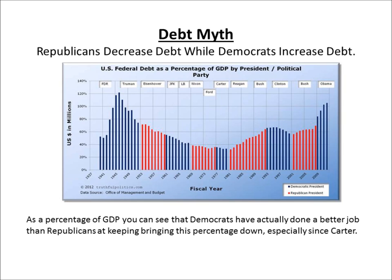Any president we would have elected in 2008 — this spending would have increased in response to the recession. Because Keynesian economics dictates that you flood the market with income, with revenue, to stimulate the economy. Bush kind of did this with the bailout right at the end of his term, and Obama did the stimulus package right after that, which greatly increased spending and raised the percentage of GDP.